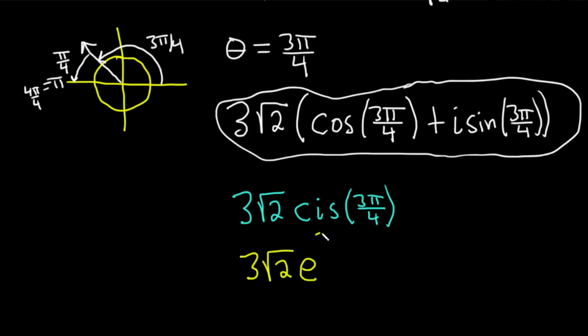It's 3 root 2, E to the 3 pi over 4 times I, where this E to the 3 pi over 4 times I is equal to the cosine of 3 pi over 4 plus I sine 3 pi over 4. So all of these are equivalent answers.